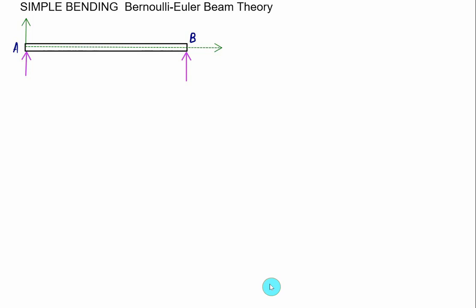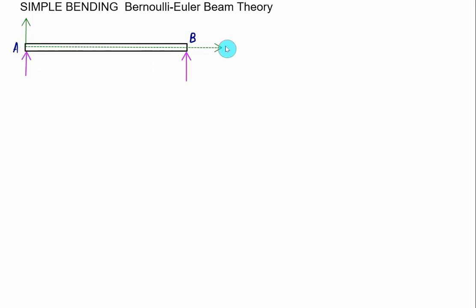We'll develop here the flexure formula in the case of simple bending, with the assumptions already covered in the last video. For this, we'll consider one simply supported beam and fix our axis system at point A. The horizontal axis is called X and the vertical axis is Y. Supports are given at A and at B.